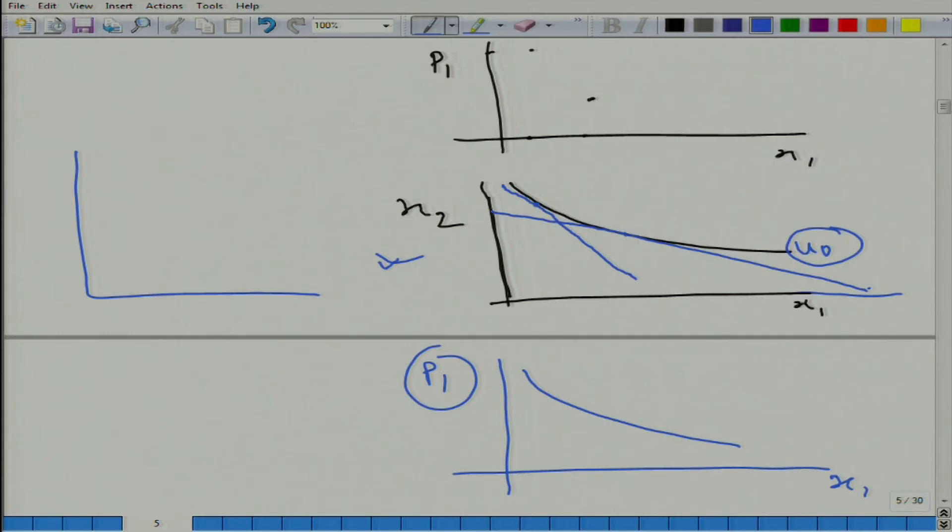So, we have two demand functions: Marshallian demand function and Hicksian or compensated demand function. Unless it is stated, if in the question or anywhere in the literature it is written the demand function, then you should assume that it is Marshallian demand function. Whenever we are talking about compensated demand function, it is typically explicitly mentioned.